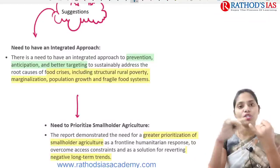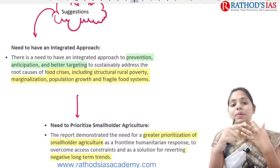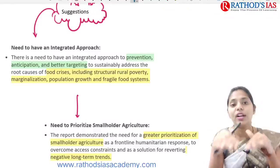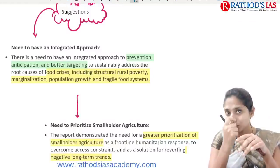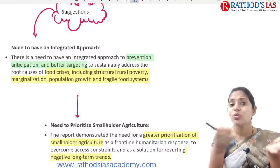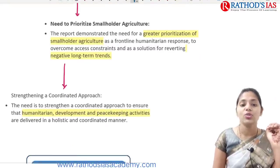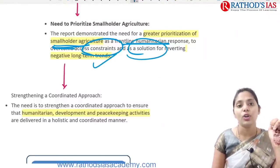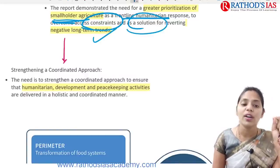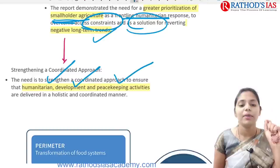Suggestions include an integrated approach focusing on prevention, anticipation, and better targeting to sustainably address root causes. Root causes include food crisis, poverty, marginalization, and population growth. We need to prioritize smallholder agriculture as a frontline humanitarian response, and strengthen a coordinated approach to ensure humanitarian development and peacekeeping activities.